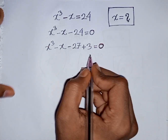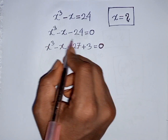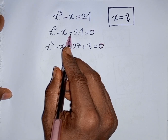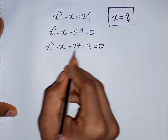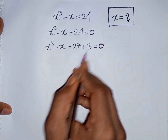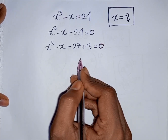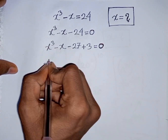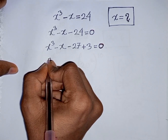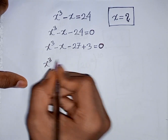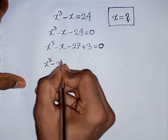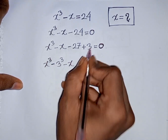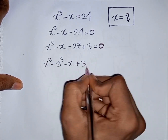How to understand this? Pay attention here. The nearest cubic number to 24 is 27. So you can write -24 as -27 + 3. Now, x³ - 27 is the same as x³ - 3³. Then we have minus x + 3 = 0.